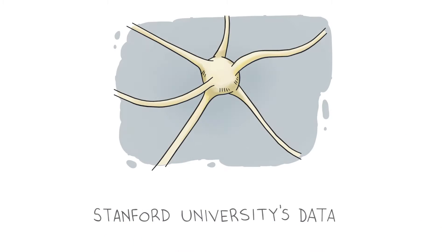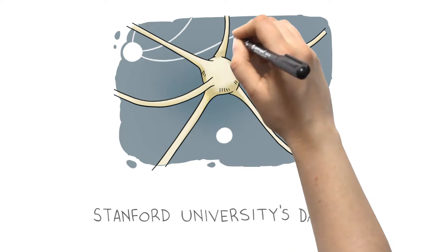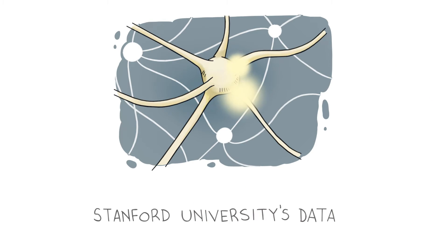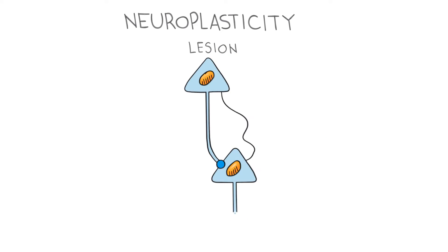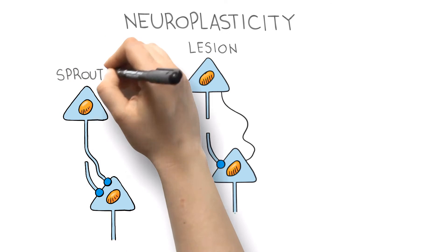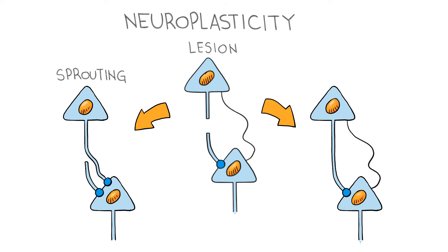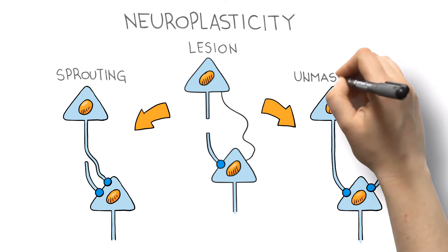This phenomenon called neuroplasticity allows existing neural pathways that are inactive or used for other purposes to take over and carry out functions lost due to injury. Researchers also claim that our brain is capable of changing even years after a stroke.